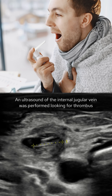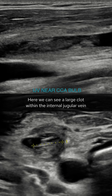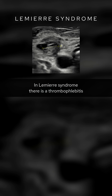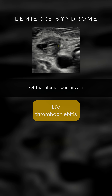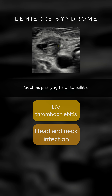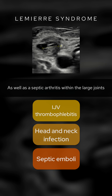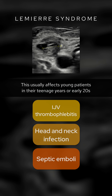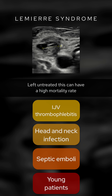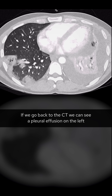An ultrasound of the internal jugular vein was performed looking for thrombus, and here we can see a large clot within the internal jugular vein, meaning we can now make a diagnosis of Lemierre's syndrome. In Lemierre's syndrome, there is a thrombophlebitis of the internal jugular vein, usually in the setting of a bacterial head and neck infection such as pharyngitis or tonsillitis, which then leads to a septicemia, and you can get septic emboli within the lungs as well as septic arthritis within the large joints. This usually affects young patients in their teenage years or early 20s and is usually treated with IV antibiotics and anticoagulants. Left untreated, this can have a high mortality rate.